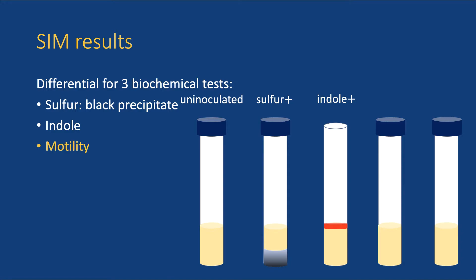Lastly, we can see if the bacteria are motile. Because the agar concentration in the SIM tube is quite low, motile bacteria can move freely throughout the medium. When you inoculated the tube, you introduced bacteria in a thin line down the center of the SIM tube. After incubation, hold the tube up to the light to see the stab line. If the line looks clean, the bacteria are non-motile. If you can see bacterial growth radiating outward from the stab line, the bacteria are motile.